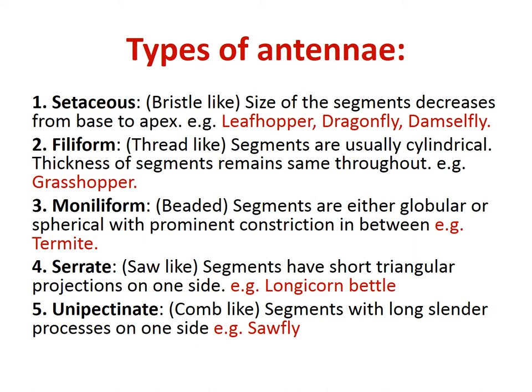Different types of antennae: First is setaceous, the bristle-like type. Size of the segments decreases from base to apex. Examples: leafhopper, dragonfly, damselfly. Filiform type is thread-like; segments are usually cylindrical and uniform in thickness throughout. Example: grasshopper. Moniliform is the beaded type; segments are globular or spherical with prominent constrictions in between. Example: termite. Serrate type — segments have short triangular projections on one side. Example: longhorn beetle. Unipectinate is comb-like, with long paired processes on one side.